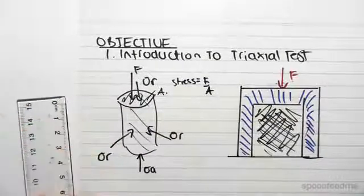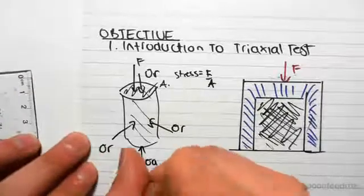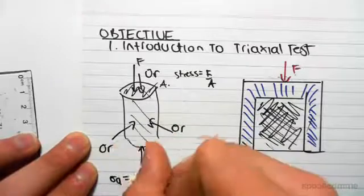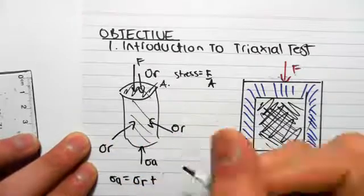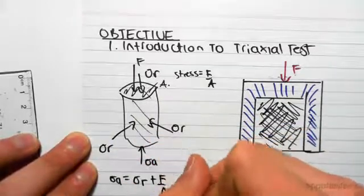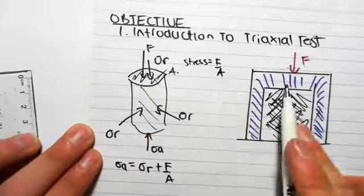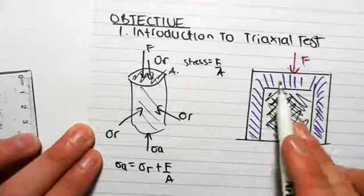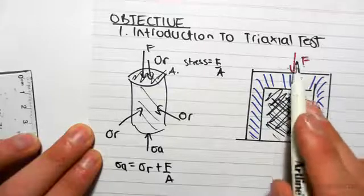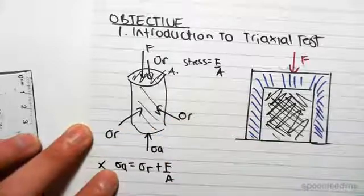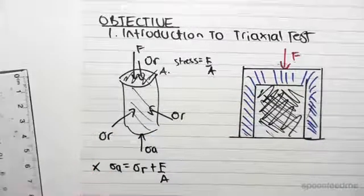So if we wanted to relate all these things together, we would say that the axial stress is equal to the radial stress, so for vertical equilibrium, plus this F on A. The axial stress equals the radial stress from the pressure of the water, plus this force acting over the area. We're going to be using this equation in the next video and discuss it a bit further.